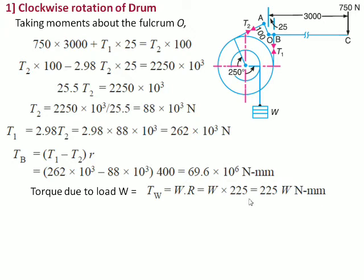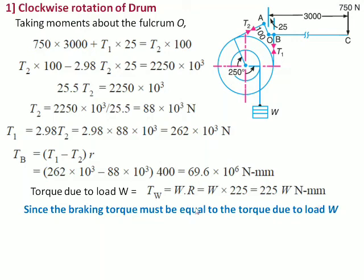As this 225 is taken in mm, this will be in newton-mm. So since the braking torque must be equal to the torque due to load W, we need to equate TW and TB. Hence 225 times W should be equal to 69.6 into 10 raise to 6. And finally, after the calculations, we get W is equal to 309 kN for the clockwise rotation of the drum.